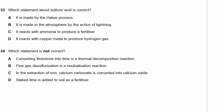Question 33. Which statement about sulfuric acid is correct? A — it's made by the Haber process — no, the Haber process makes ammonia. B — it's made in the atmosphere by the action of lightning — no, that applies to N2 reacting with O2. C — it reacts with ammonia to produce a fertilizer — correct. D — it reacts with copper metal to produce hydrogen gas — no, copper is too unreactive to react with dilute acid. The answer is C.